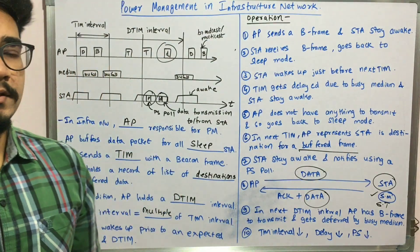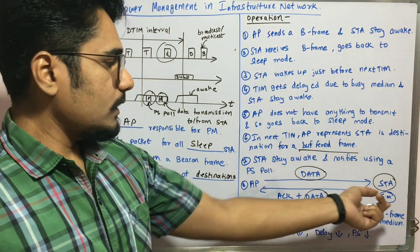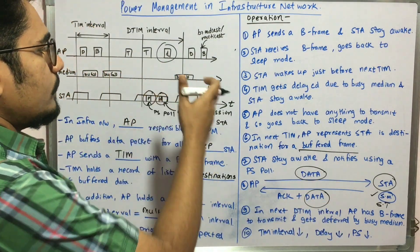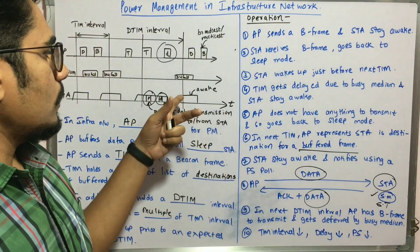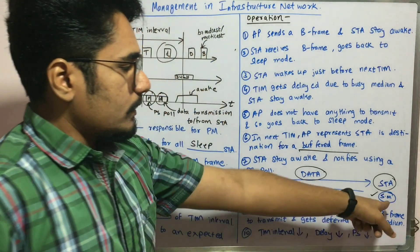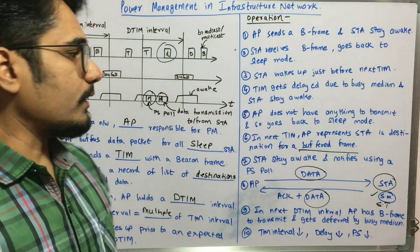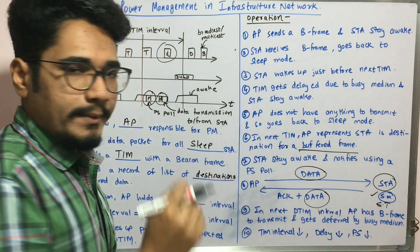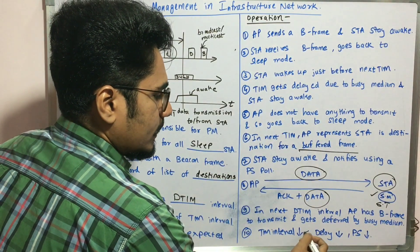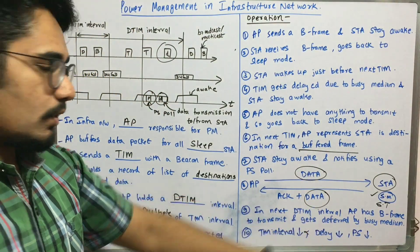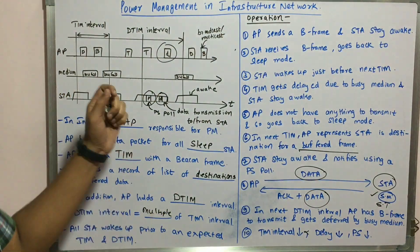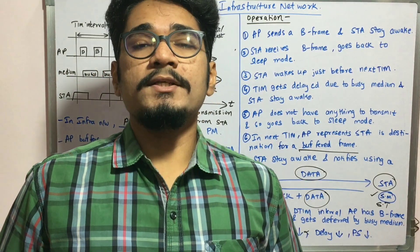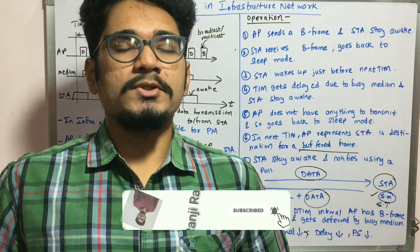The bottom line is: if the sleep duration is very short, the station only needs to be awake for that short time and not for a long interval. If the TIM interval is short, that is directly proportional to delay — so delay will also be short, but power saving will be very low. That concludes power management in the infrastructure network. If you enjoyed this video, please like, share, comment, and subscribe. Thank you for watching.